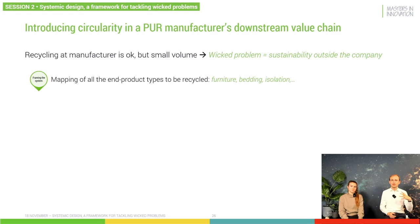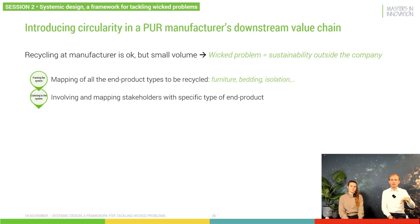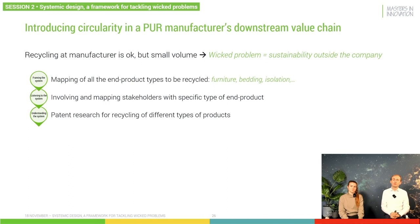Nevertheless, in this type of project, we started with mapping what the end-to-end product types were that could be refurbished — furniture, bedding, isolation, etc. — and also looking at who are the actors behind and between that. As a second step, when mapping all these stakeholders and specific product types, it's also important to understand some of the dynamics behind the system. One of the dynamics we wanted to understand were the technological evolutions that played out, and which of these stakeholders could benefit from those technical evolutions. We did this, for example, with a patent search.